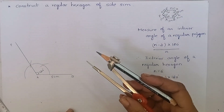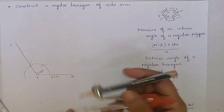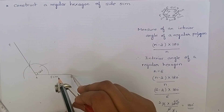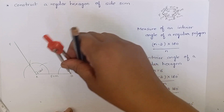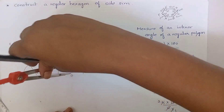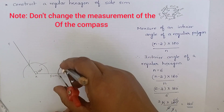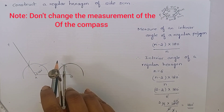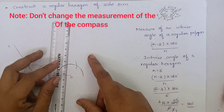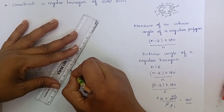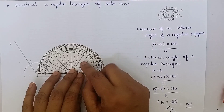Construct an angle of 120 degrees at point B. To do this, adjust your compass to any measurement of your choice. Keep the compass at point B and draw an arc. Keep the compass at this point and cut an arc. Keep the compass at this point and cut another arc. Join this and produce a line. You can verify this by using the protractor — it measures 120 degrees.